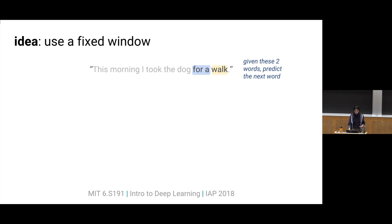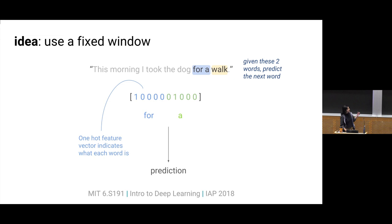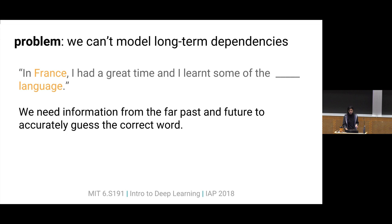One simple way to do this would be to just cut off the vector — take a fixed window and force this vector to be fixed length by only considering the previous two words. No matter where we're making the prediction, we'll just take the previous two words and try to predict the next word. We can represent these two words as a fixed-length vector and feed this into a machine learning model like a feedforward neural network or logistic regression. One thing you might notice is that by using this fixed window, we're giving ourselves a very limited history. We're trying to predict the word "walk" having only seen the words "for" and "a." This is almost impossible — it's really hard to model long-term dependencies.